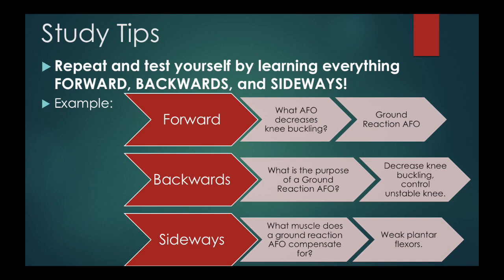You learn it forward and back, and this is really important because sometimes when we're studying, we might make a connection and not realize that we only learned it in one direction. You might know the AFO that decreases knee buckling is a ground reaction AFO when prompted, but if you were asked it backwards, you might not be able to tell me the purpose of it. So you have to learn everything both ways.